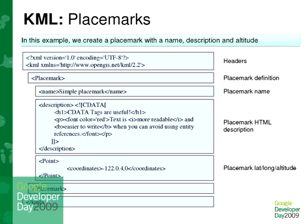Let me take you through the very basic example of how to create a placemark. First, the header, which is an XML header, then with the reference to the KML namespace, and then a placemark definition, which has a name and then a description, which can be basic HTML. You can even extend the schema to add some structured data as well. And of course, the point coordinates where you place that placemark.